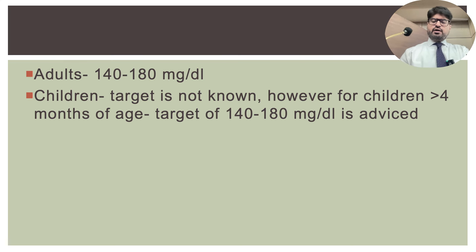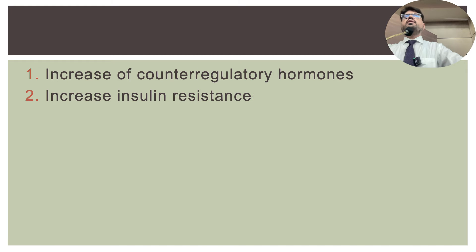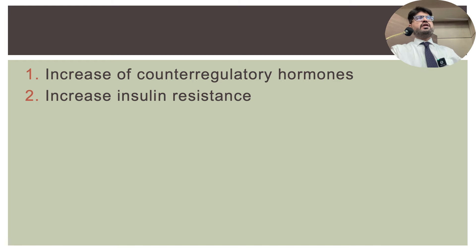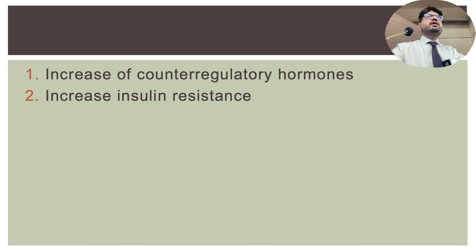There are two aspects leading to hyperglycemia in critically ill patients: an increase in counter-regulatory hormones — some of which we actually use in critical care practice — and an increase in insulin resistance. One important rule of medicine is that hyperglycemia is often reactionary to any infection or inflammatory condition.